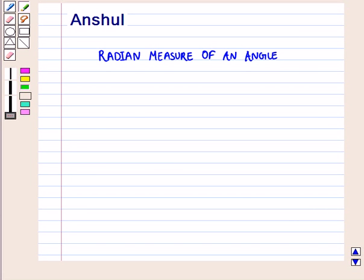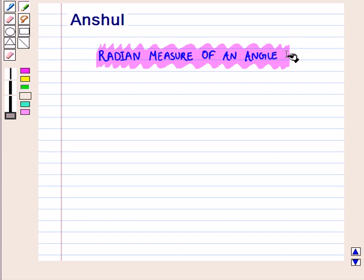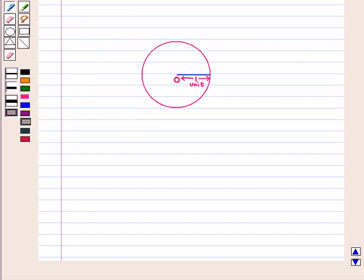Hello and welcome to the session. In this session we will understand radian measure of an angle as the length of the arc on unit circle subtended by an angle, and we shall also discuss how to convert radians into degrees and degrees into radians. Now let us start with unit circle.